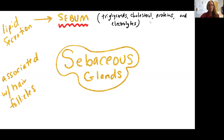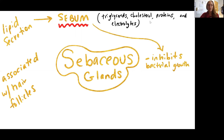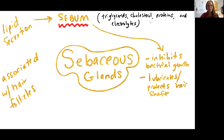The sebum itself is a mixture of triglycerides, cholesterol — so those are both lipids — proteins, and electrolytes. It's going to have several jobs, which we've described some already. One that we haven't talked about is the inhibition of bacterial growth. So in addition to protecting the integrity of the stratum corneum and the hair shaft and also providing some water resistance, we also see this protection from bacteria. We've talked about lubrication of the hair shaft and conditioning of the skin, so the stratum corneum layer.